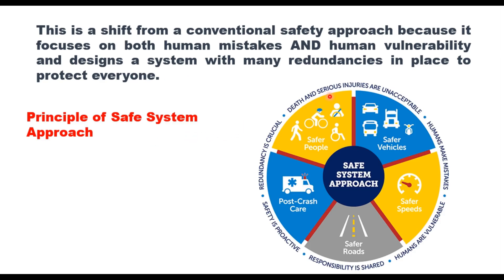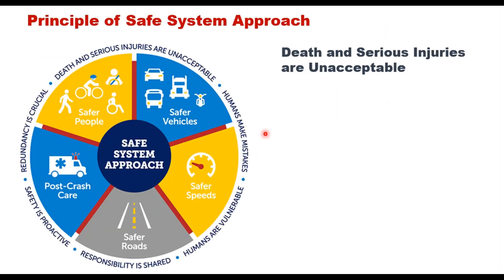There are six principles of the safe system approach: one, death and serious injuries are unacceptable; two, humans make mistakes; three, humans are vulnerable; four, responsibility is shared; five, safety is proactive; and six, redundancy is crucial. These six principles make a complete safe system approach for road safety.